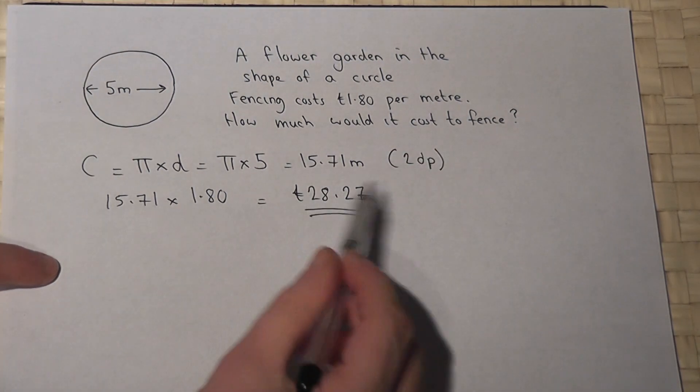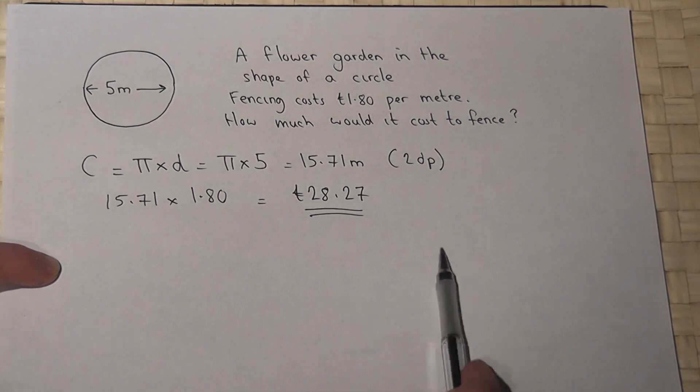It's money, so we round to two decimal places.